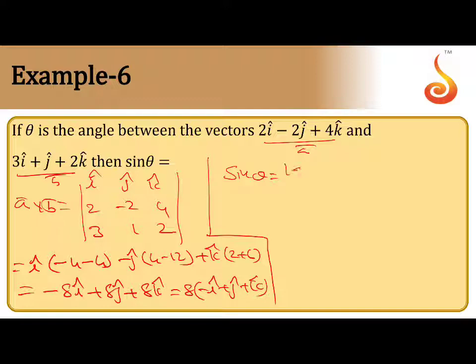So sin theta equal to magnitude of a cross b by magnitude of a into magnitude of b. So magnitude of a cross b means 8 outside, and magnitude of i minus j plus k is root over 1 plus 1 plus 1, by root over 4 plus 4 plus...